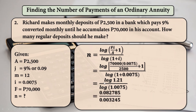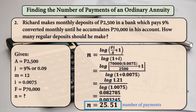The result of log of 1.21 is 0.082785, and the result of log of 1.0075 is equal to 0.003245. So N is equal to 25.51 — the number of regular deposits by Richard.